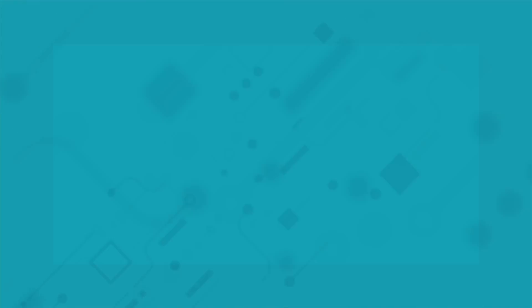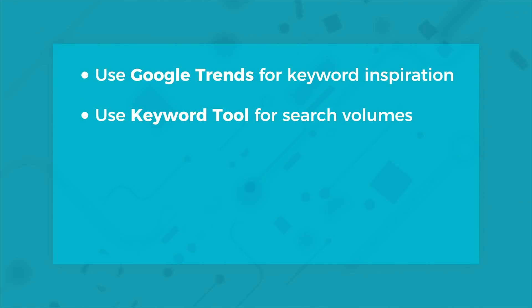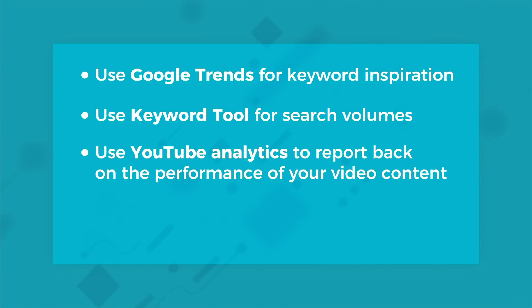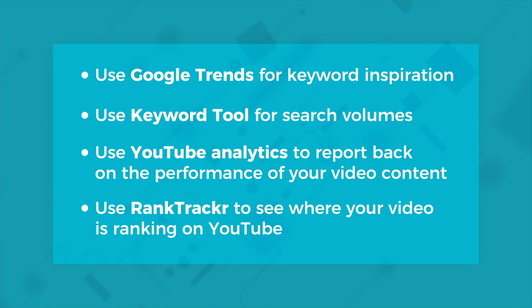It's important to record data and always refer back to it. To recap, these are the best tools to get your YouTube videos ranking organically: use Google Trends for keyword inspiration, use Keyword Tool for search volumes, use YouTube Analytics to report back on the performance of your videos, and use Rank Tracker to see where your video is ranking on YouTube.